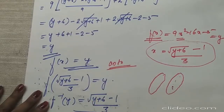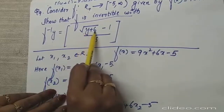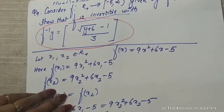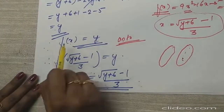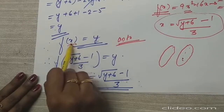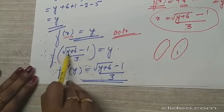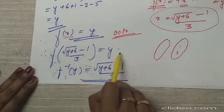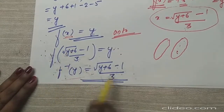Now we find f⁻¹. Since f(x) = y, and we found x = (-1 + √(y + 6)) / 3, we can write f((-1 + √(y + 6)) / 3) = y. Shifting y to the right-hand side gives f⁻¹(y) = (√(y + 6) - 1) / 3, which is exactly what we needed to show.